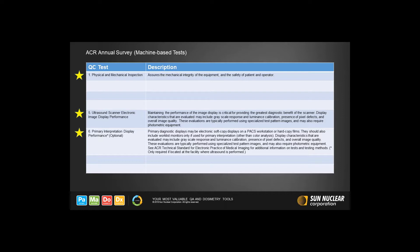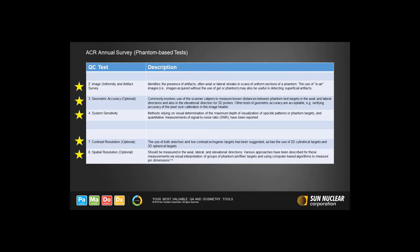These generally are not done using a phantom. Items on ACR's list that are done using phantoms are evaluating image uniformity and testing for transducer element dropout, checking horizontal and vertical distance measurement accuracy, testing sensitivity for all transducers, and evaluating the contrast resolution and spatial resolution. These two items are said to be optional.